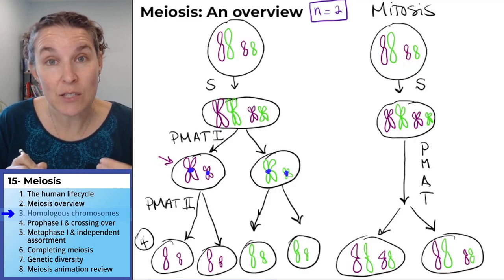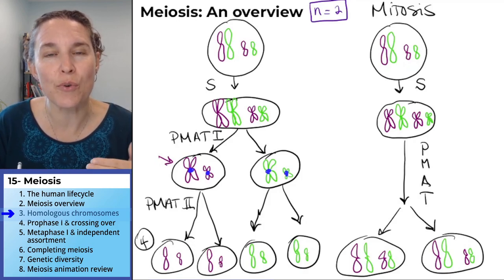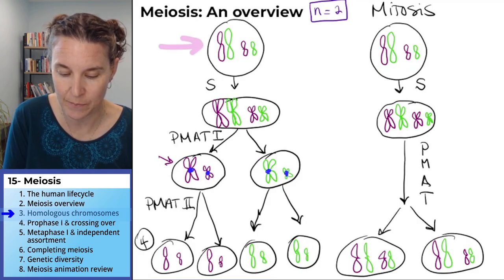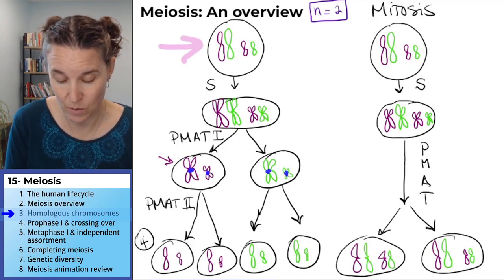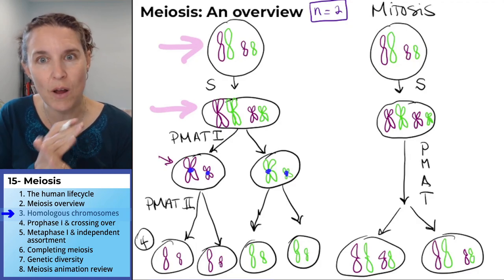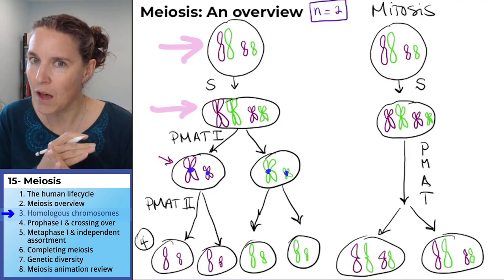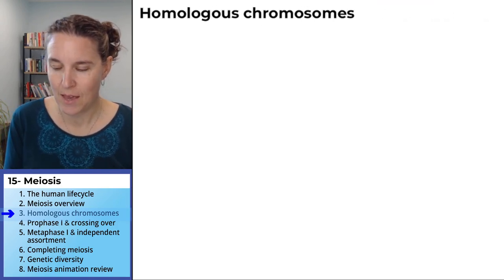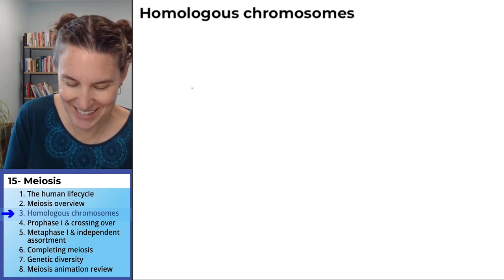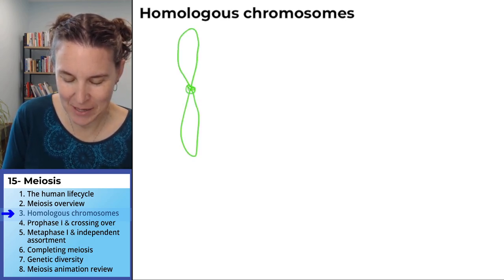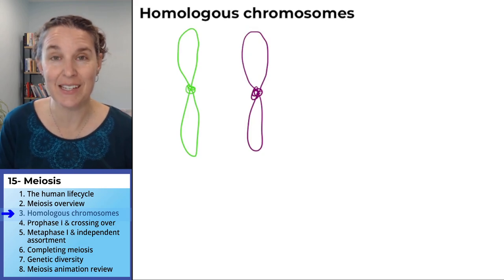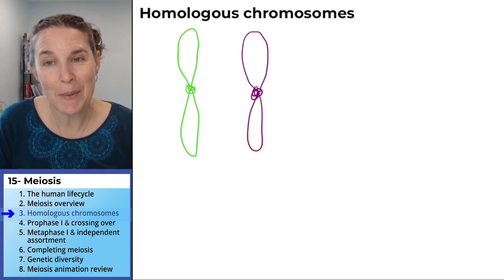I'm going to draw my homologous chromosomes as if they have gone through S phase. We've got homologous chromosomes before and after S. We can either draw them as one little log or we can draw them as an X log. I kind of feel like maybe we'll end up drawing them both ways, because that makes it a little bit easier. I drew a homologous pair.